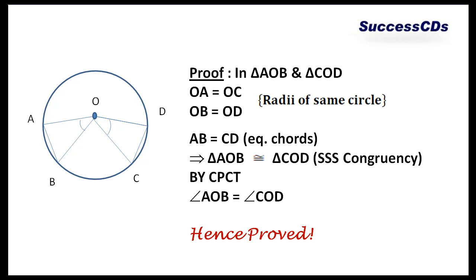Thus, triangle AOB is congruent to triangle COD by SSS congruency, that is, side-side-side congruency. By CPCT, I get angle AOB is equal to angle COD. Thus, it is proved that in a circle, equal chords subtend equal angles at the center.